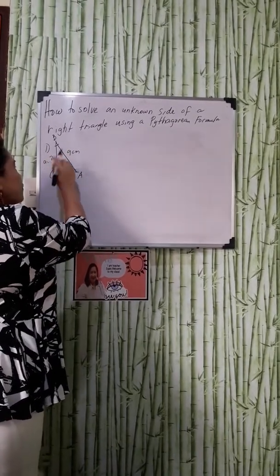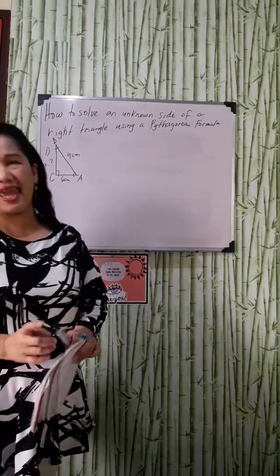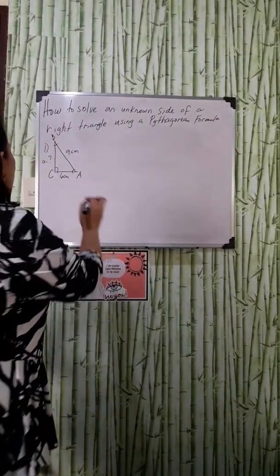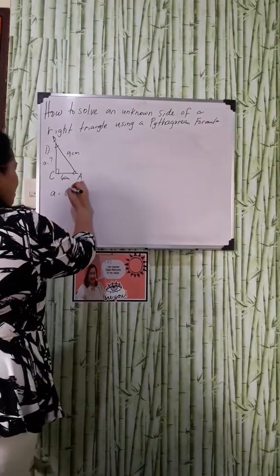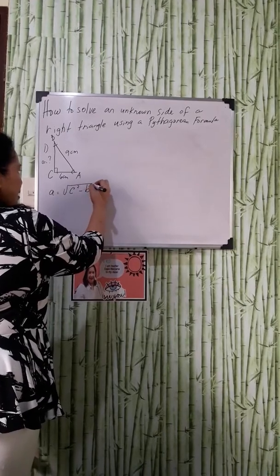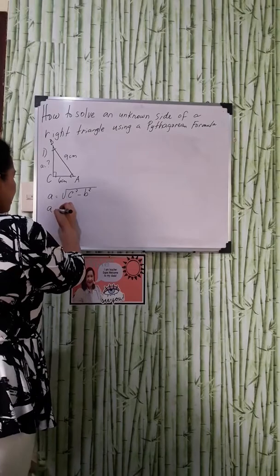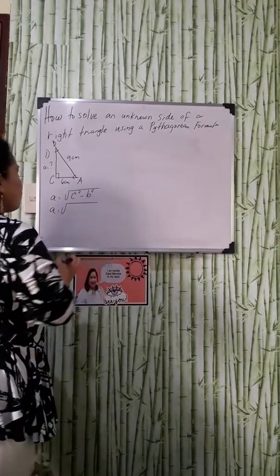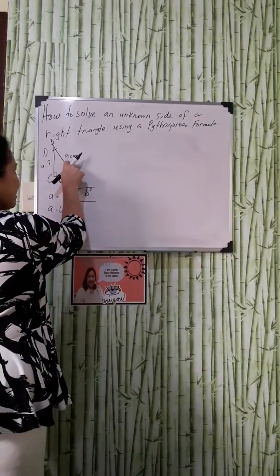We are looking for side A. When we say side A, that is equal to the square root of C squared minus B squared. Right? A is equal to the square root of what is the value of our side C? Our side C is 9.